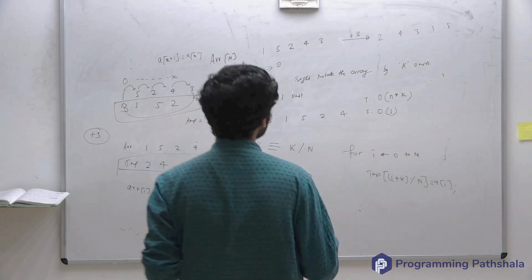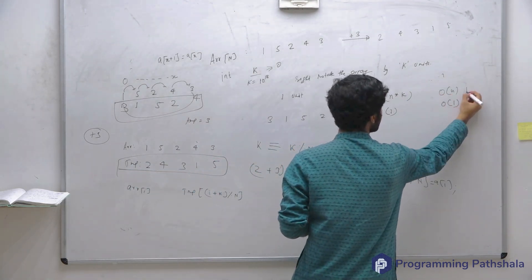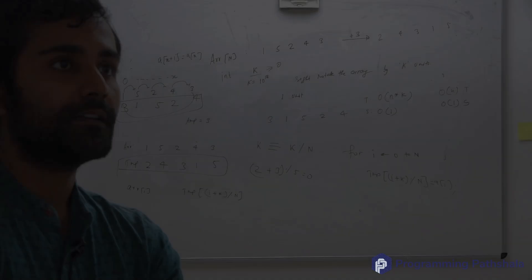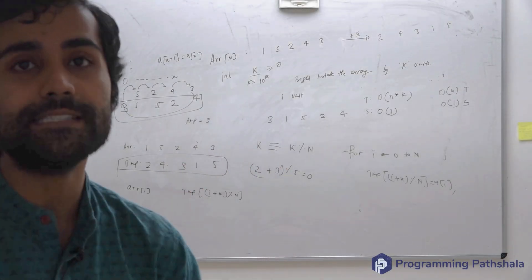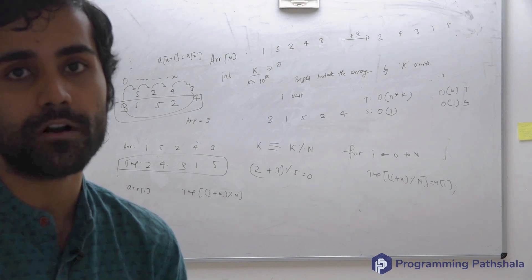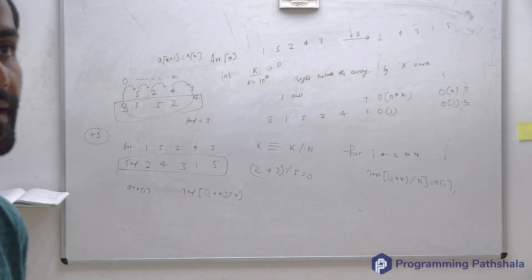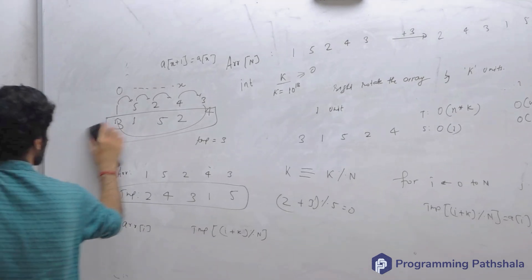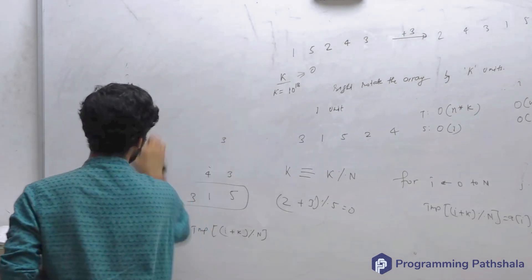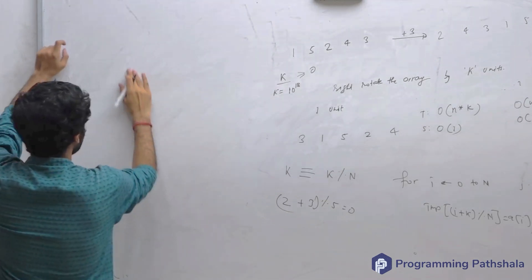Now can I do it in order n time and order one space? This is quite important. We'll understand the logic behind this, how to think of this. Please remember this forever because this will be very handy in many questions. Let me ask you a question. Let's say there is an array